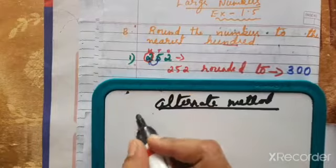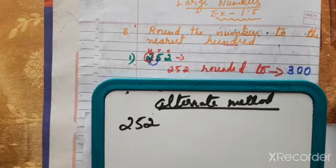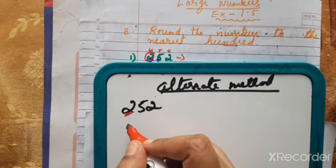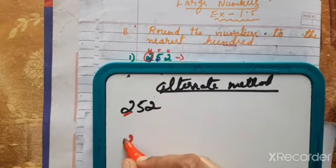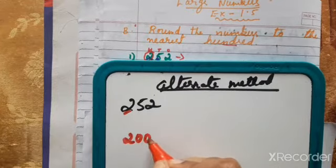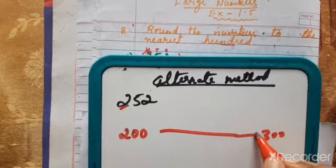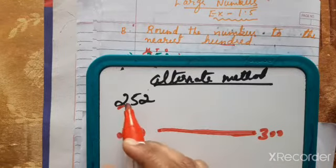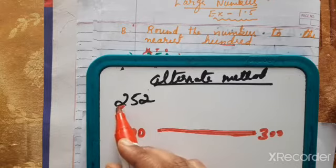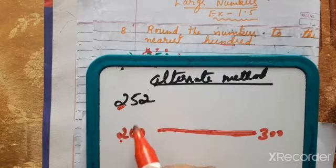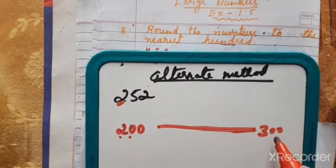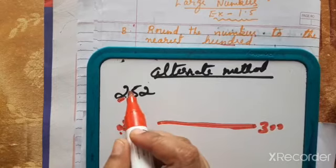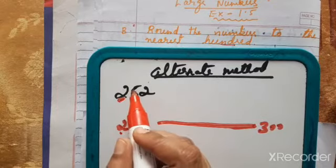Now let's check our answer with the alternate method. We are rounding 252 to the nearest hundred. We look at the number line between 200 and 300, because we are rounding the hundreds place. The difference between 200 and 300 is 100. We keep the hundreds digit and make remaining digits zero.